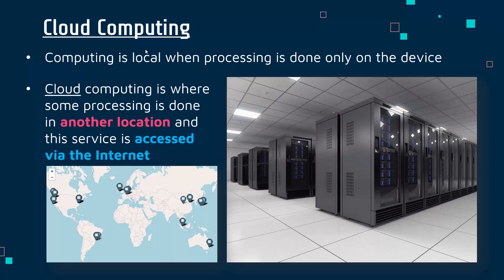The word 'local' is not used nearly as much in computing as in storage, but local computing is what happens most of the time on your phones, laptops, and games consoles — where the processing is done using the hardware of your own device. Cloud computing, as you might expect, is where some of this processing is done somewhere else, usually in a big data center, accessed via the internet. You provide data to the cloud computing provider, they process it on powerful computers, and it gets returned to you via the internet.